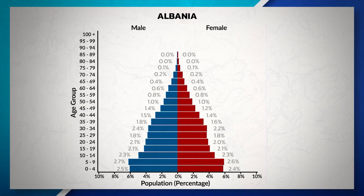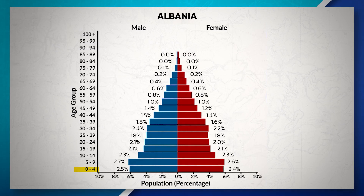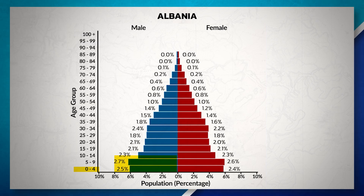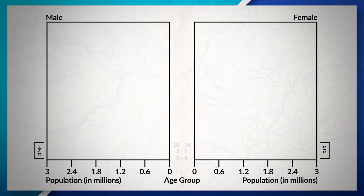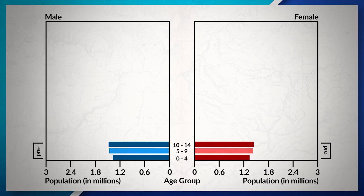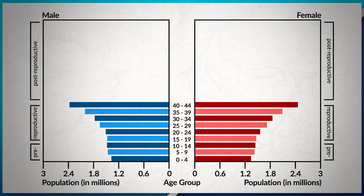For instance, when looking at the population pyramid of Albania, we can see that 4.9% of the population is between the ages of 0 to 4 years old, with 2.5% being male and 2.4% being female. The different age intervals can be grouped into pre-reproductive (0 to 14), reproductive (15 to 44), and post-reproductive (45 and up). Understanding these groups provides valuable insights into the country's population trends.